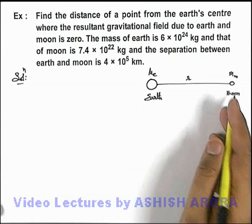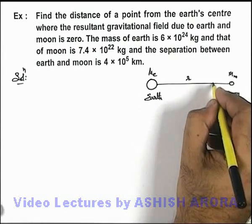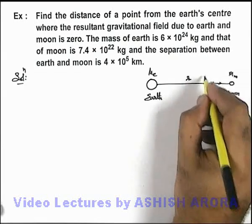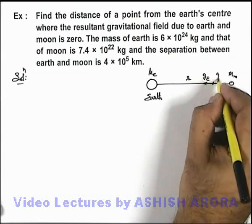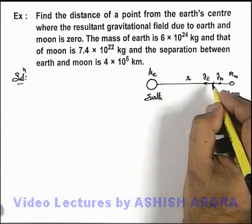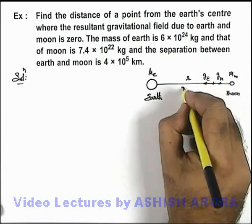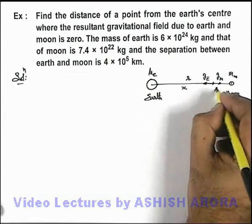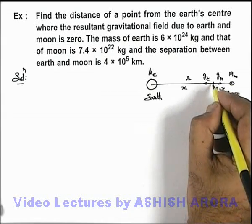Obviously, as mass of moon is relatively smaller, there will be a point which is near to moon where the gravitational field due to earth and gravitational field due to moon will get balanced. Say this point is at a distance x from the center of earth and this will be located at r minus x from the center of moon.